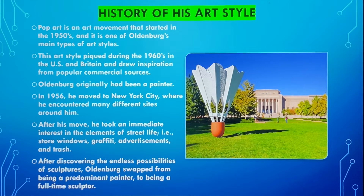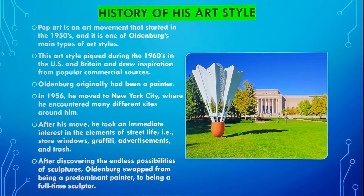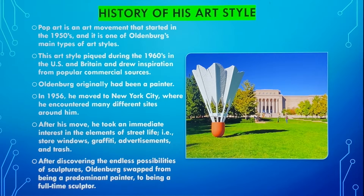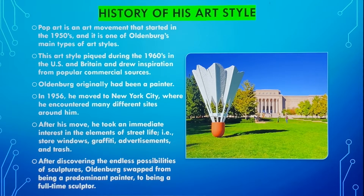Pop art is an art movement that started in the 1950s and it's one of Oldenburg's main art styles. It reached its peak during the 1960s between the US and Britain, drawing inspiration from different popular commercial sources. Oldenburg had originally been a painter, but in 1956 when he moved to New York City, he got to see a lot of different sights around himself and felt an immense immersion in seeing the different elements of city street life.